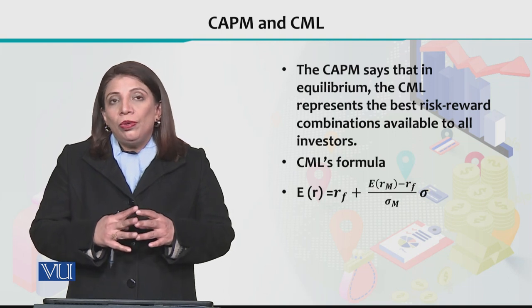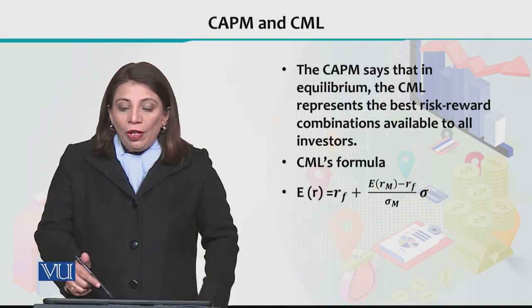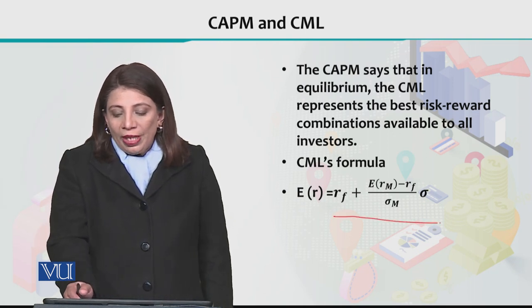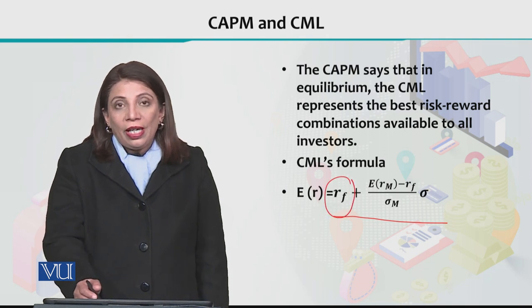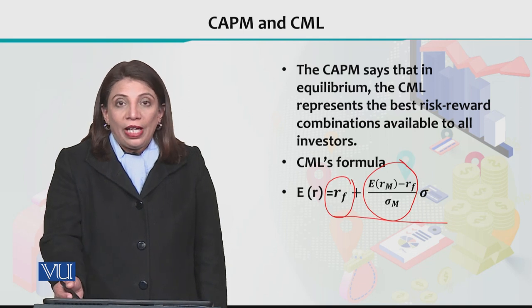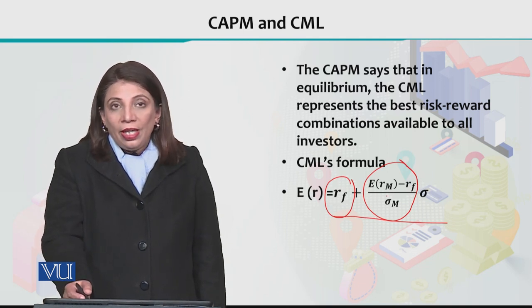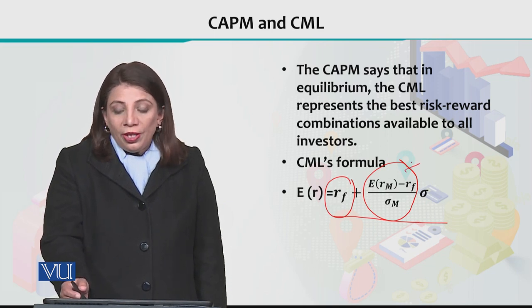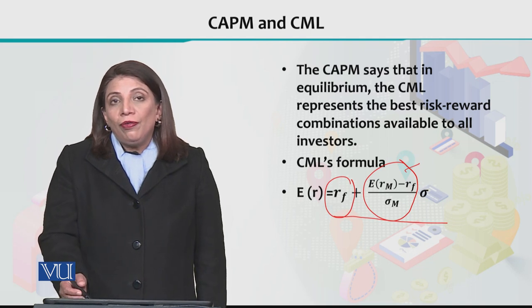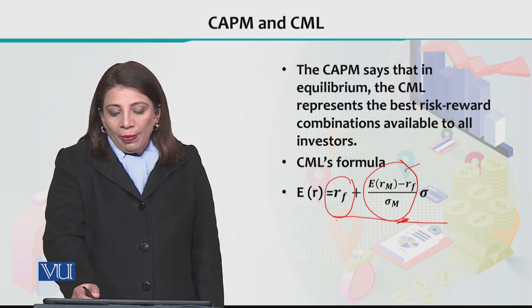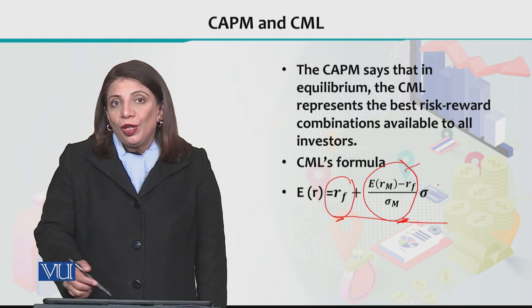Regarding the Sharpe ratio: looking at the CML's formula, the intercept is the risk-free return, and the slope is the Sharpe ratio — specifically the difference between the expected market return minus the risk-free return, divided by the standard deviation of the market return. That slope and intercept together give you the capital allocation line at the point of tangency.